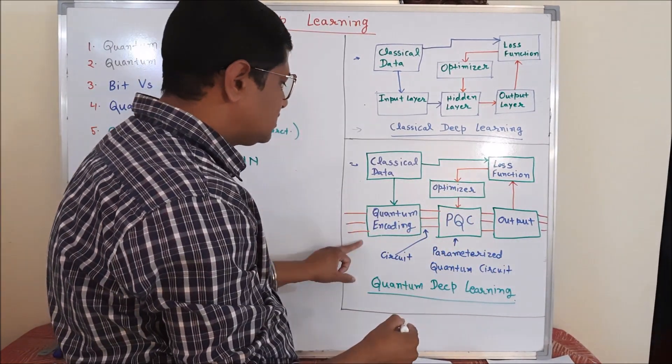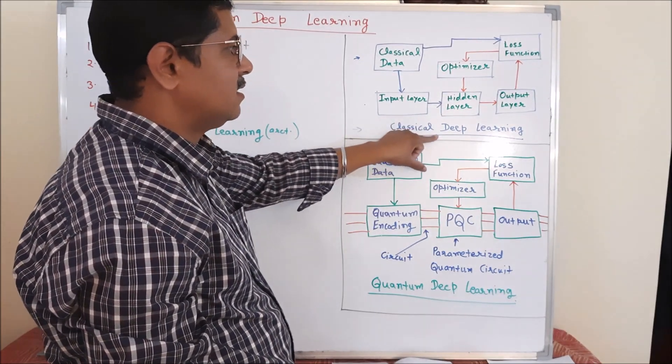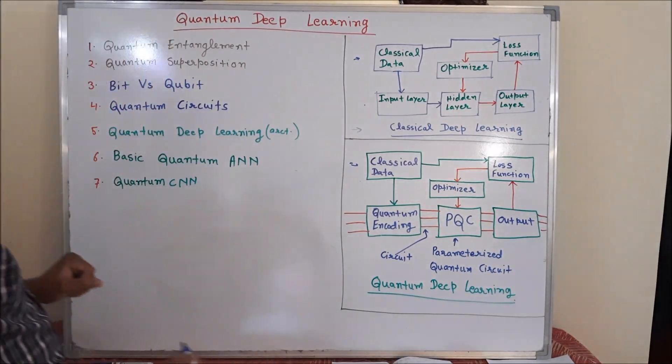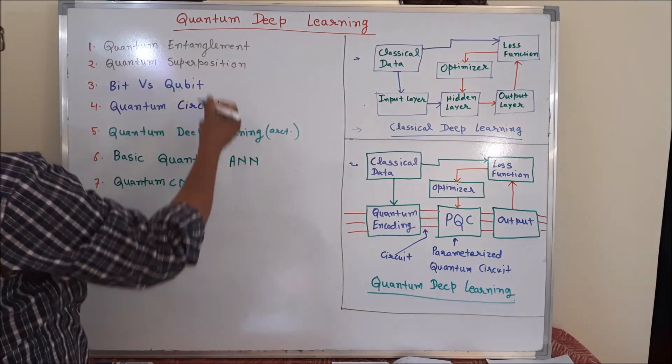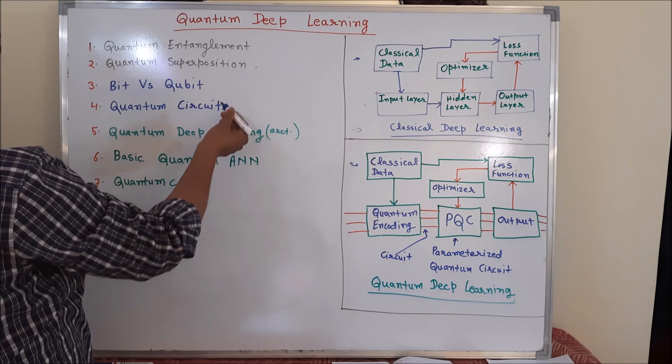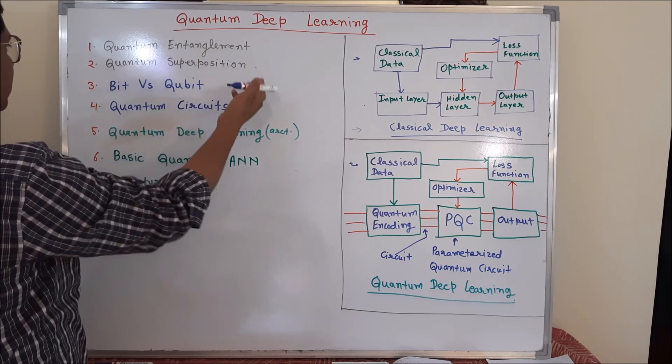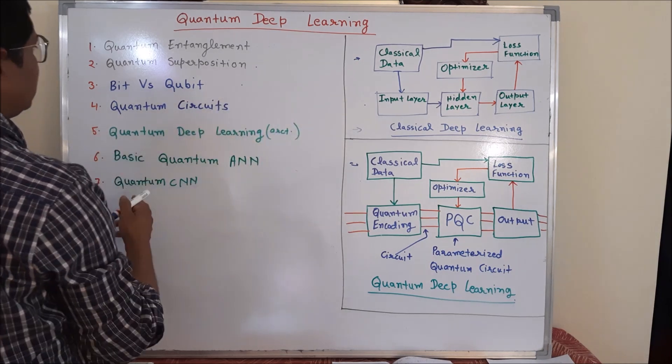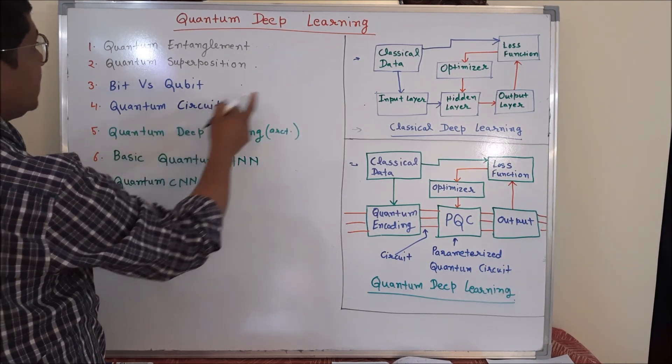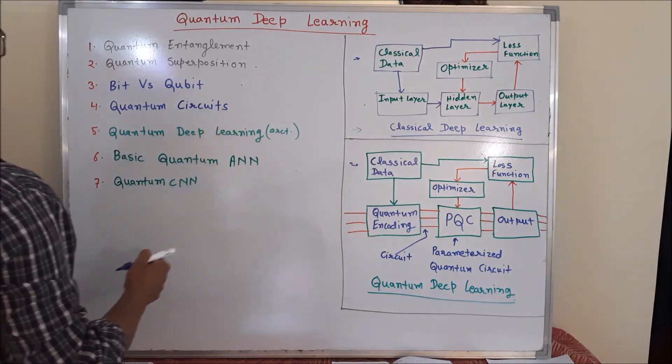So to understand the quantum way to achieve the same classical deep learning system, we have to go through these things like basics like quantum entanglement, quantum superposition. We have to understand qubit, how it is different from bit that we use in classical deep learning. Quantum circuits, how it is different from traditional network that we use in the classical deep learning architecture.